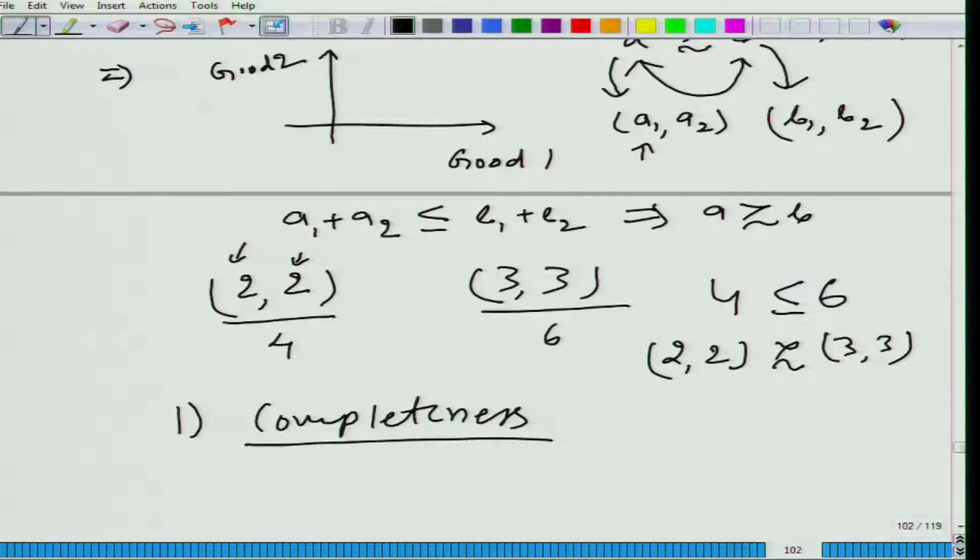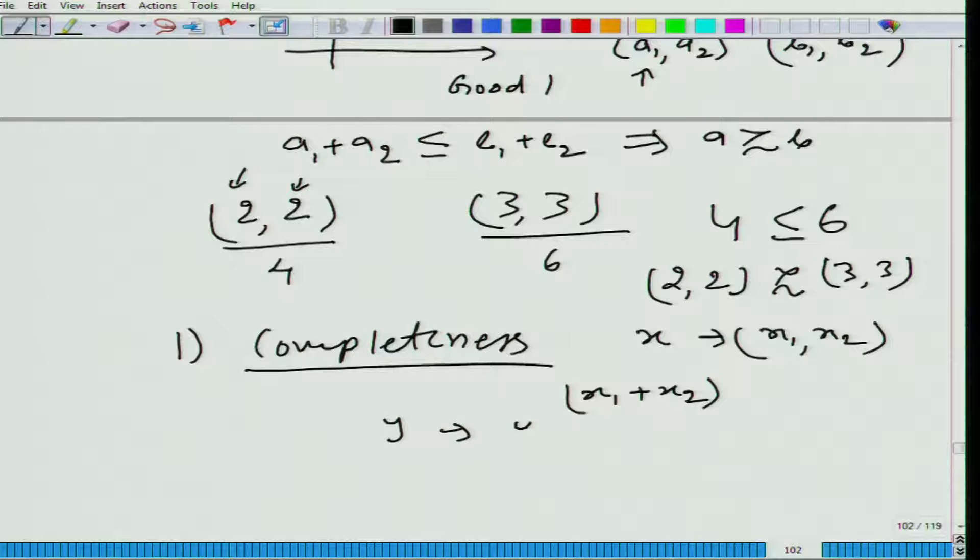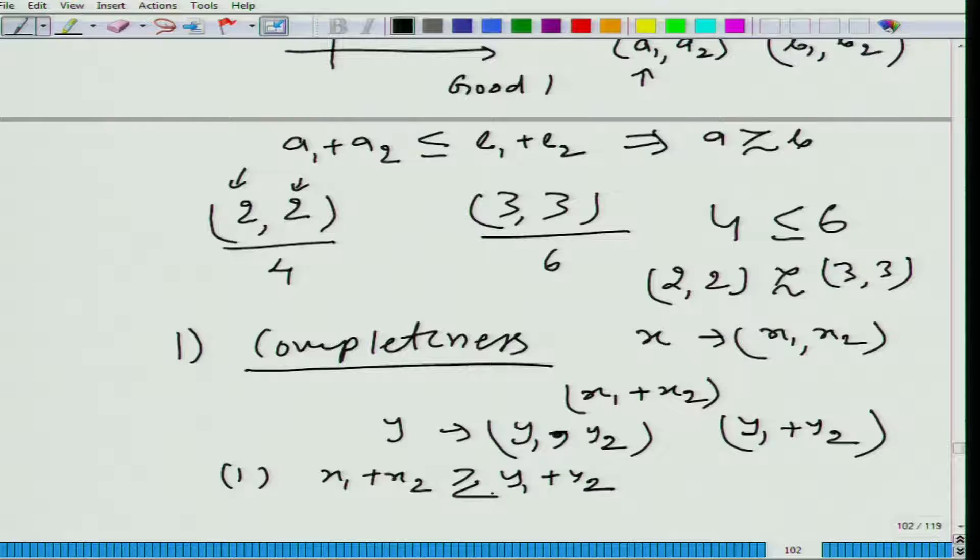Let us check for completeness. When we pick any bundle from this consumption set, let us say that bundle is x, we will get x1 comma x2 and we will be able to figure out x1 plus x2. If we are picking any other bundle y, we will get y1 comma y2 and we will be able to figure out y1 plus y2. There are one of these three possibilities: either x1 plus x2 is greater than y1 plus y2, or it is less than y1 plus y2, or equal to it. By going starting from here, we will always be able to compare. So it satisfies completeness.